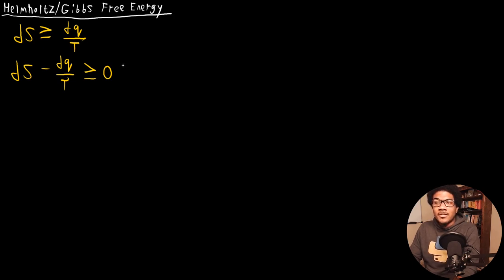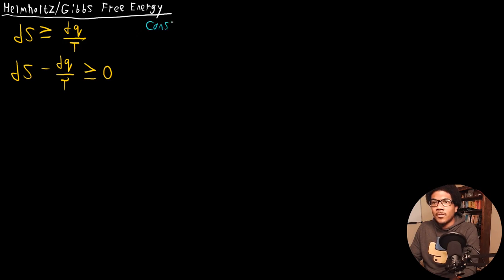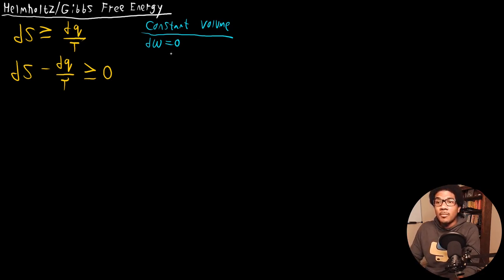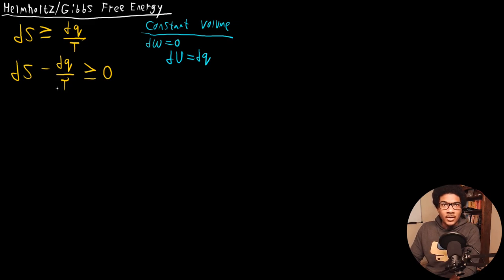Let's consider a constant volume process — a constant volume gas expansion. At constant volume, DW is going to be equal to zero, since it's just PDV and there's no change in volume. That means DU is going to be equal to DQ.